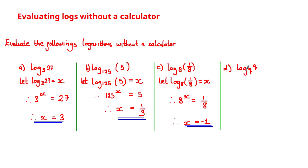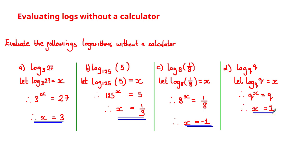For the last example we need to evaluate log base q of q. Using the same method, we let this log equal x and convert to a power equation: q to the power of x is equal to q. The value that satisfies this is x equal to 1. This example shows that when you have log base a of the same value a, the result is always 1 — so log base a of a, or log base 13 of 13, and so on, all equal 1.